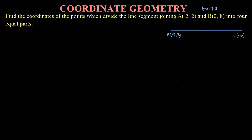So this line has been divided into four equal parts. I will divide this line equally — if I want to divide this part again into two, because there are total four parts, this line has to be divided into two parts. So let me label the points P1, P2, and P3. Now there are two methods to solve this problem.